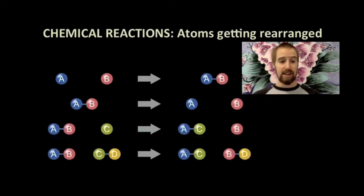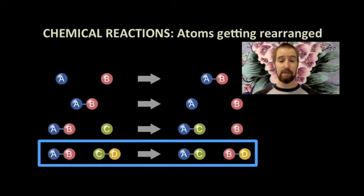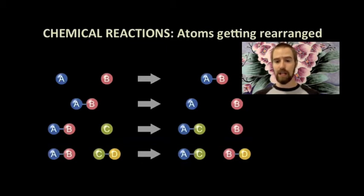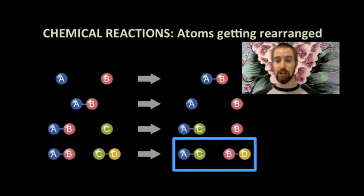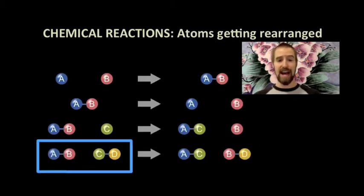Take the last row, for example. We start with four atoms — A, B, C, and D — and end with four atoms — A, B, C, and D. However, these two molecules didn't exist before this reaction, and likewise, these two molecules no longer exist after the reaction.